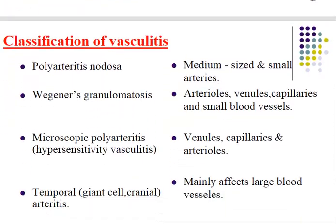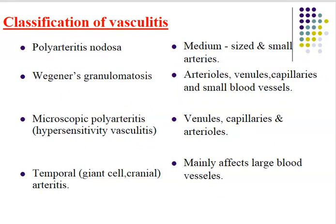Vasculitis can be classified according to various parameters: polyarteritis nodosa, Wegener's granulomatosis, microscopic polyangiitis (also named hypersensitivity vasculitis), and temporal giant cell arteritis. The classification depends mainly on the size of the vessels involved. Polyarteritis nodosa mainly affects medium and small arteries. Wegener's granulomatosis affects arterioles, venules, capillaries, and small blood vessels. Microscopic polyangiitis mainly affects venules, capillaries, and arterioles. Temporal giant cell arteritis mainly affects large blood vessels.